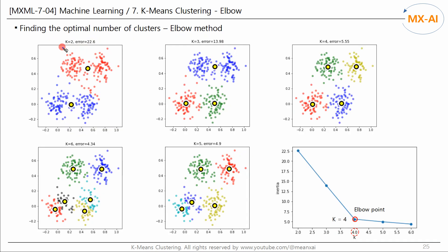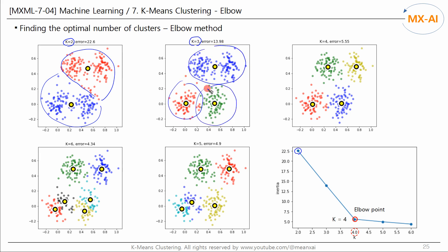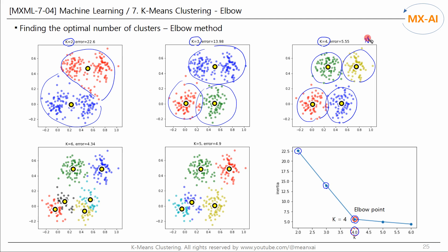Next, let's apply the elbow method to data consisting of four clusters. When k is 2, the data is clustered into two groups. When k is 3, the data is clustered into three groups. When k is 4, the data is clustered into four groups — this clustering looks good. In this case, the k value at the elbow point is 4. Therefore, it makes sense to cluster this data into four groups.